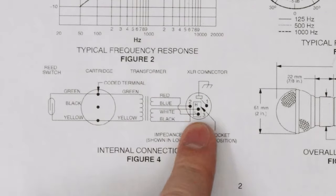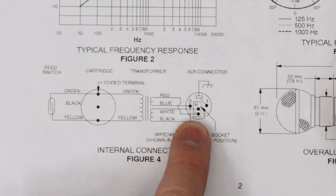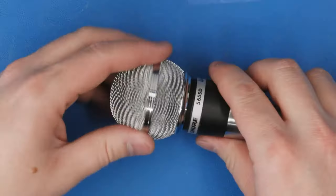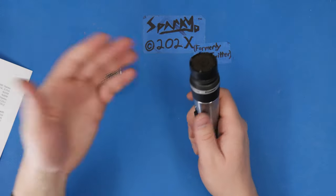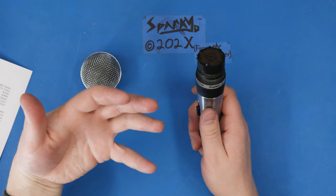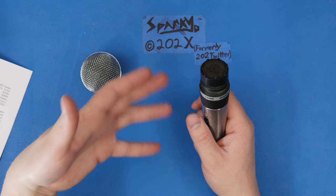And if you're wondering what goes where, pin two is where the blue and black go. Pin three is where you select between the white and red wires. Looking inside it, there's the Unisphere 1 capsule. That is a predecessor to the Unidyne 3 capsule in the SM58. It should sound pretty similar to an SM58, but not quite the same.